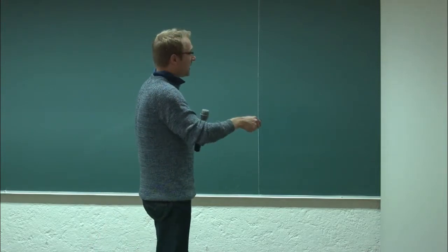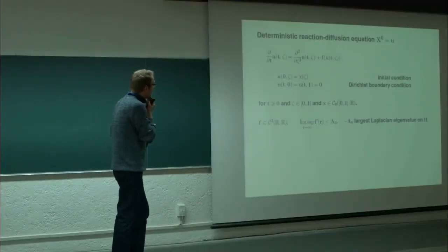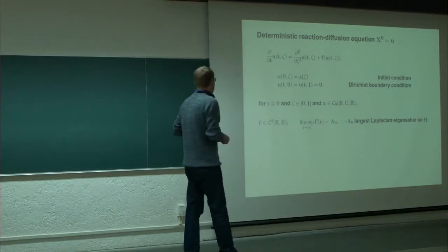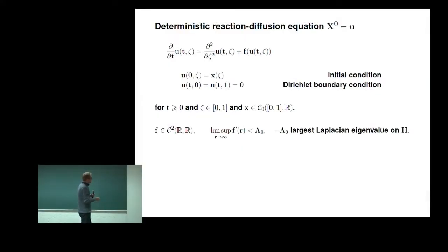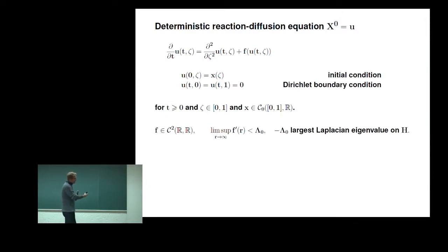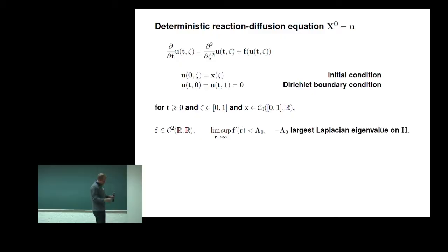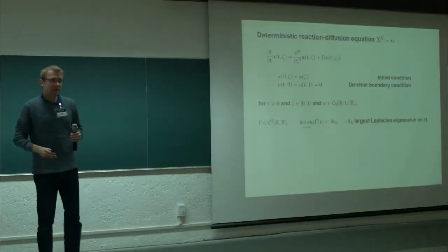As announced, we look at reaction-diffusion equations on the interval [0,1]. We have some initial conditions assumed to be continuous and Dirichlet boundary conditions. We assume some dissipativity condition: for large values, the nonlinearity is dominated by the largest Laplacian eigenvalue, so you have dissipativity in finite time and enter a large ball in the typical state space, which can be H¹.